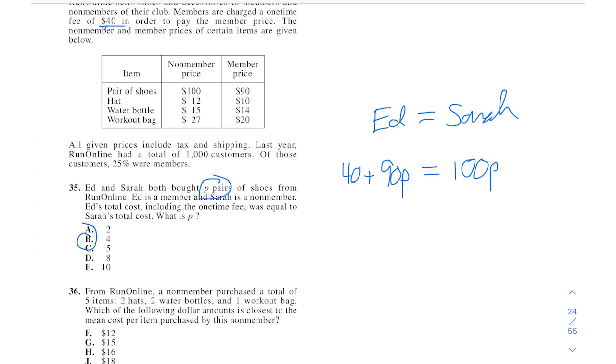Let's do this non-member pricing. So two hats for a non-member would be 24 bucks. Two water bottles for a non-member, 30 bucks. One workout bag for a non-member would be 27 bucks. So we add that all up. And then average cost per item means you're dividing by the total number of items, which is five items. So here that's 54. And 27 is 81. Over 5 is right around 16.